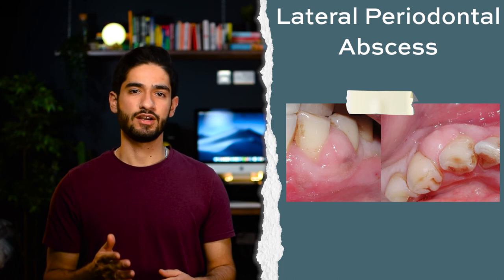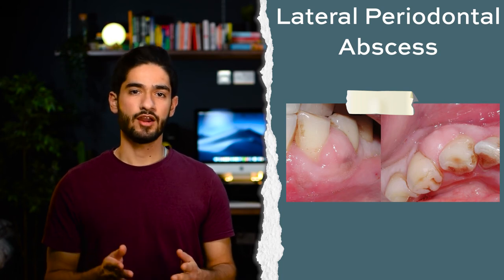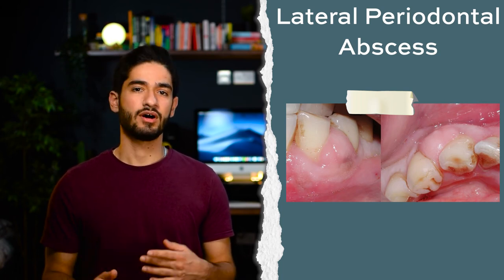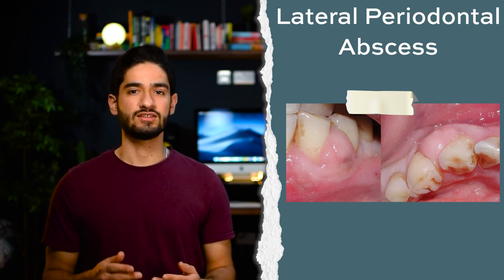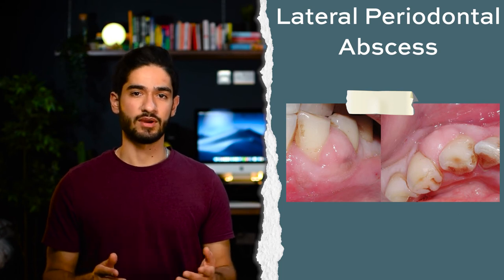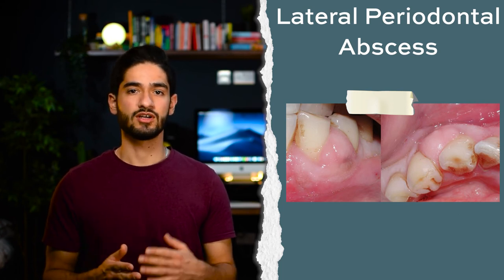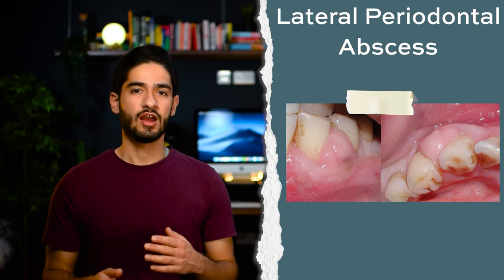Finally, combine everything you've found so far and you've got your periodontal diagnosis. One last diagnosis involving peri that we want to mention is a lateral periodontal abscess. This is similar to a periapical abscess, but it's on the side of the tooth instead of the apex, and the pulp is usually vital because pulp necrosis is not the cause here.